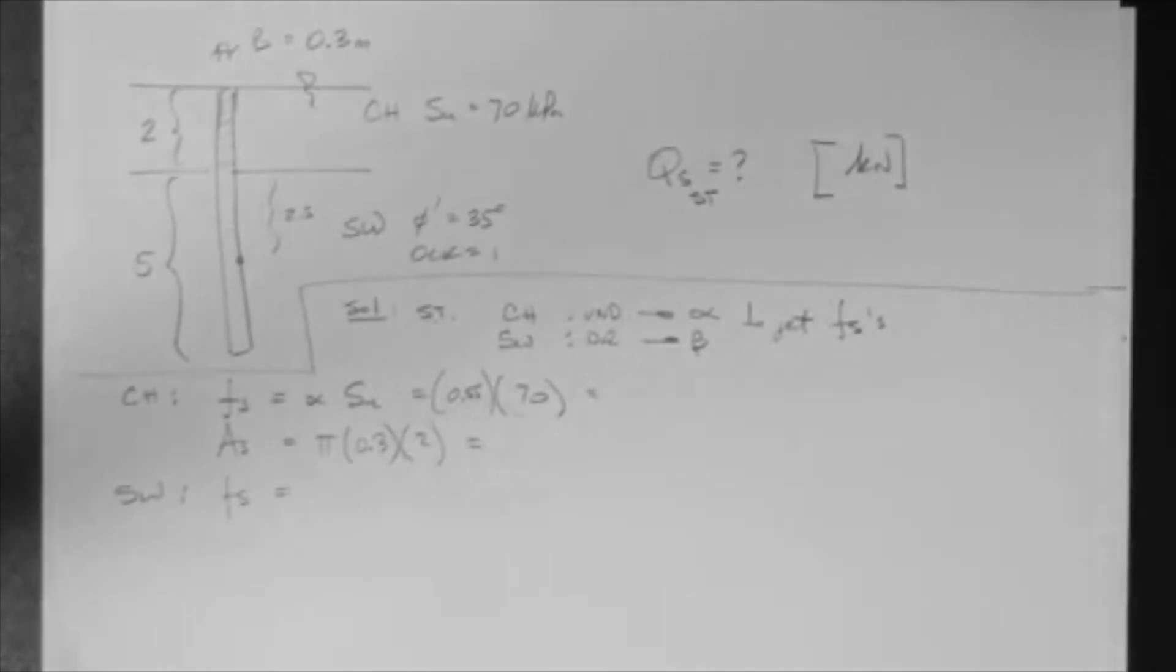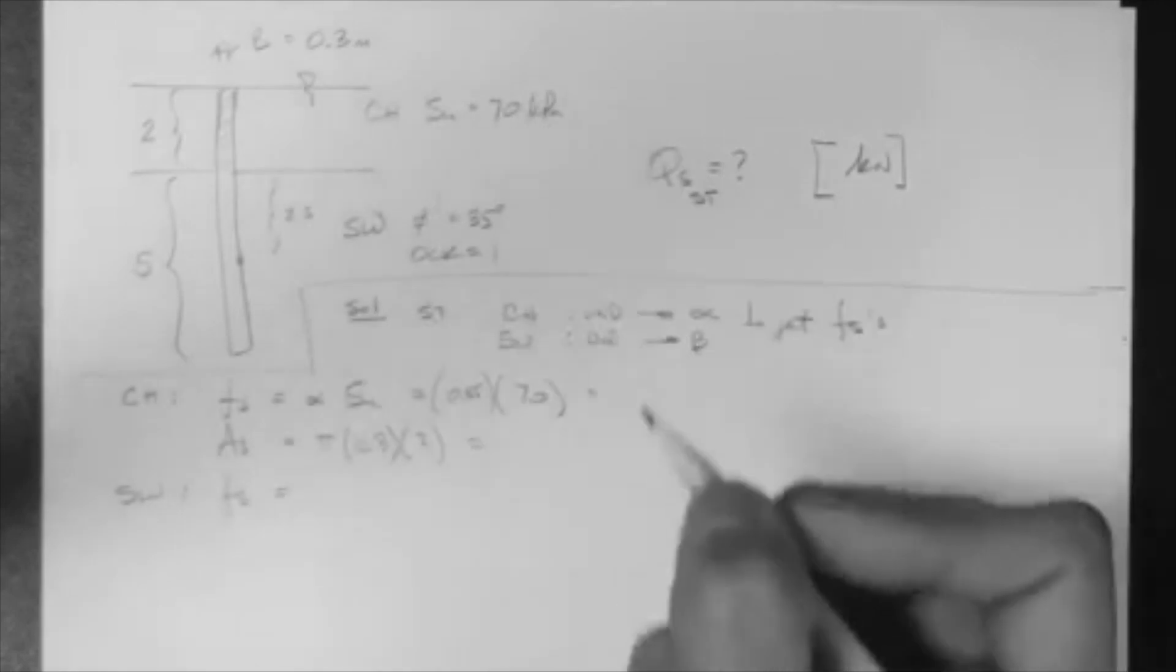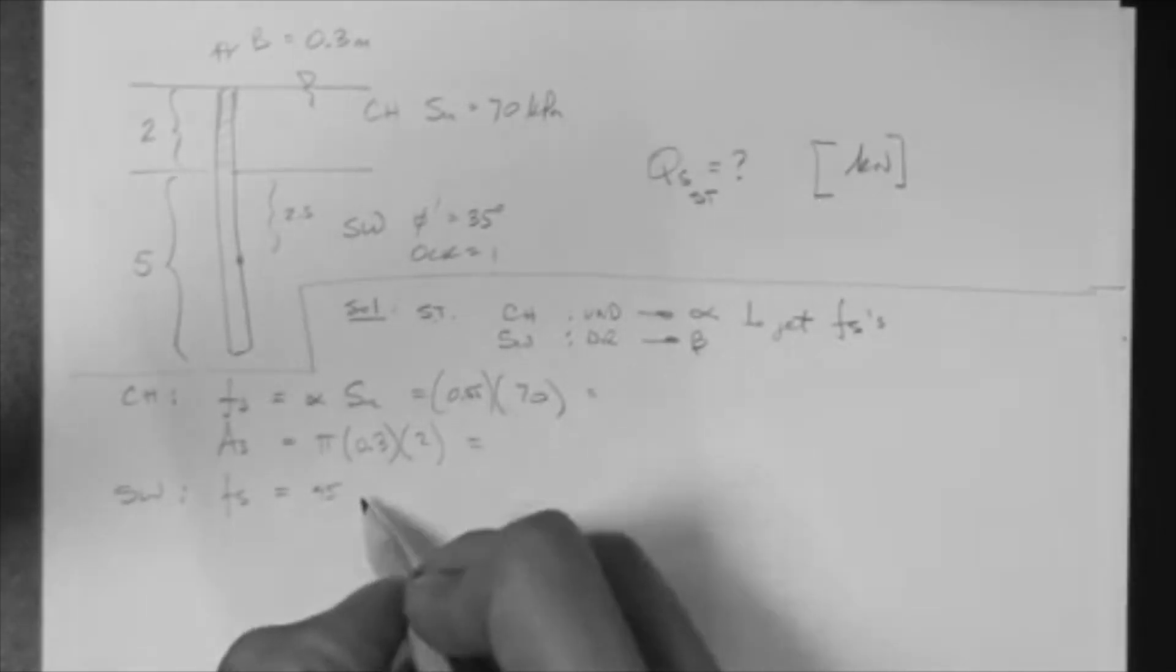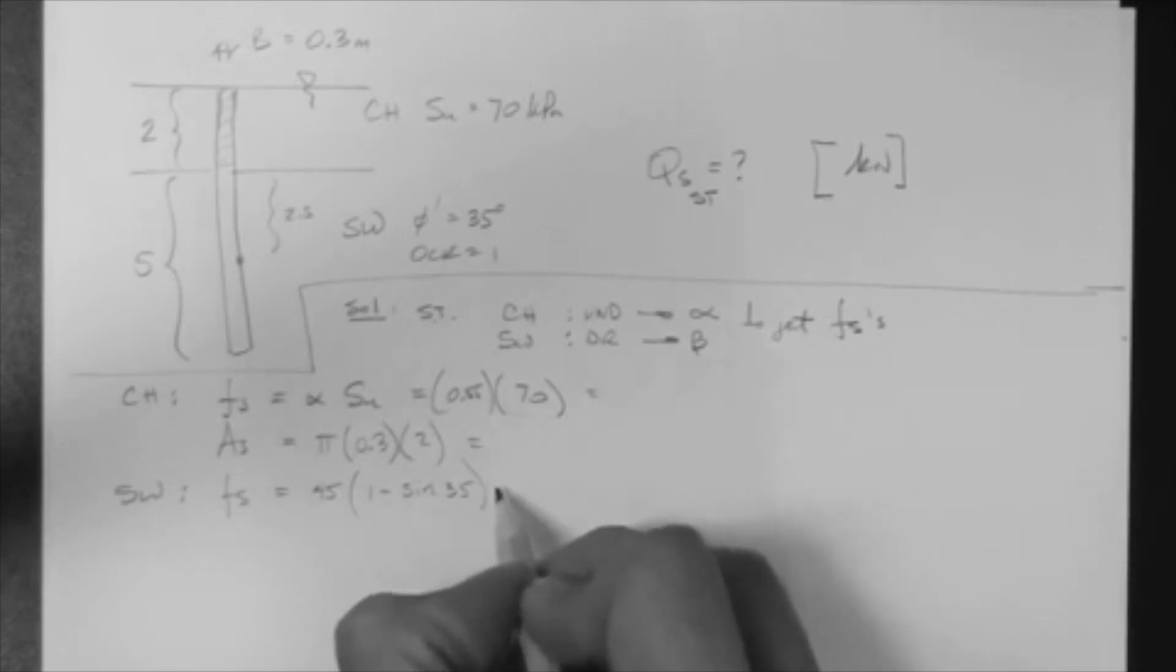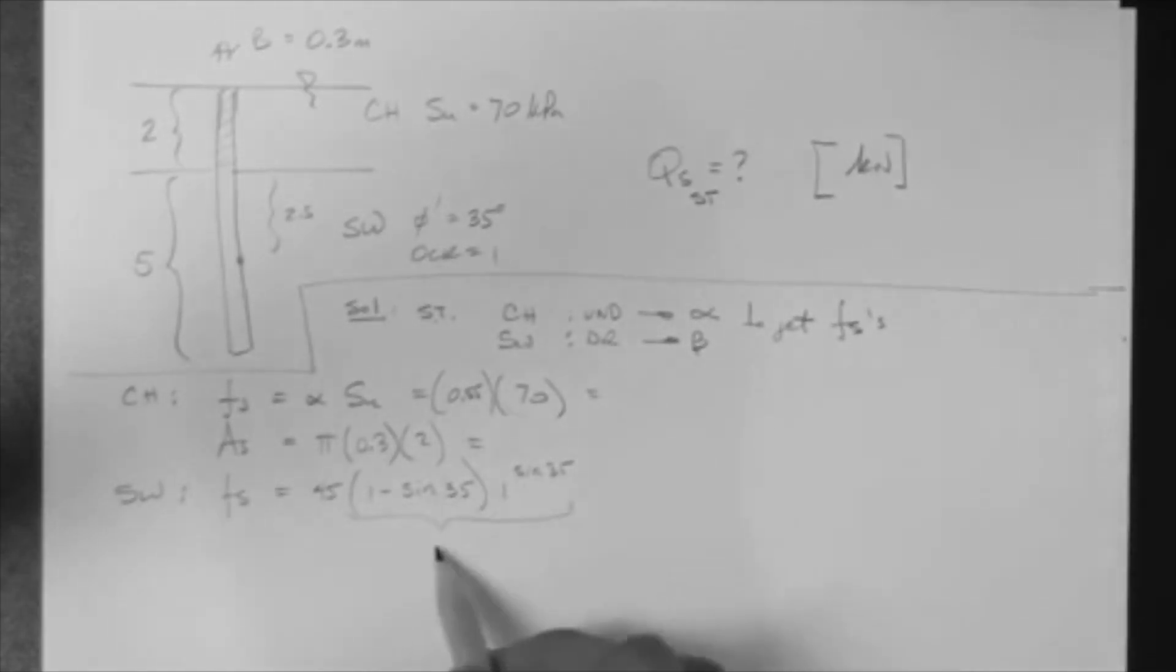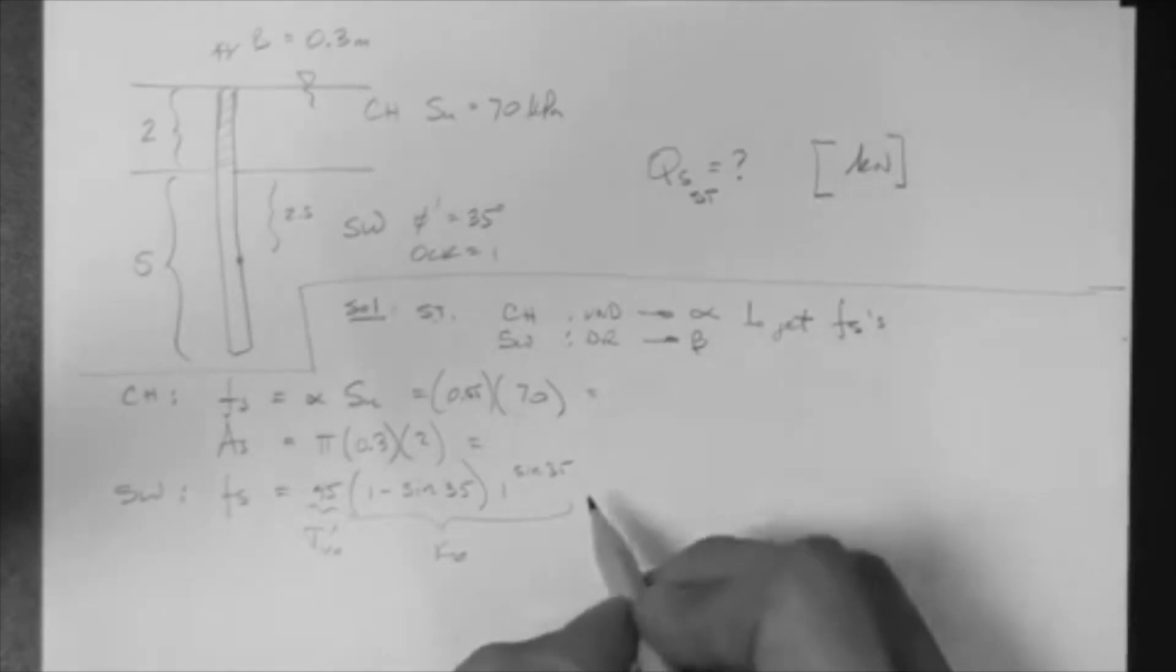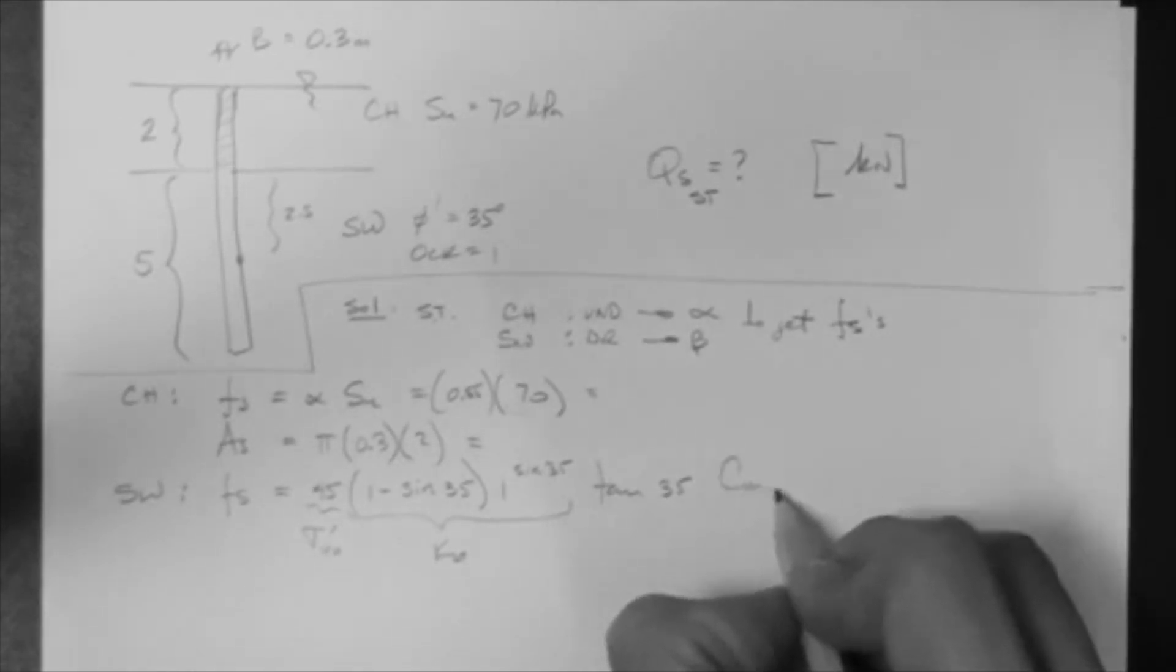Where's the water table? Well, we're finding capacity, so we're in the design mode, so we have to put the water table right there, because that's the worst case. 2.5 plus 2 is 4.5, so this is 45, times K0, which is 1 minus sine phi, times OCR to the sine 35. This is 0.35, which is phi, and then CM, CK.